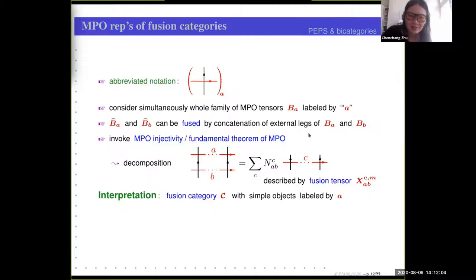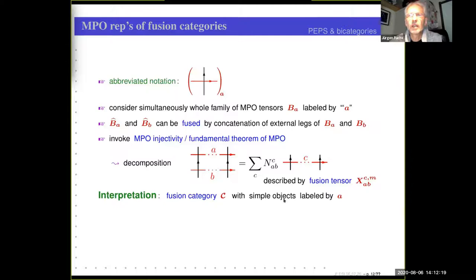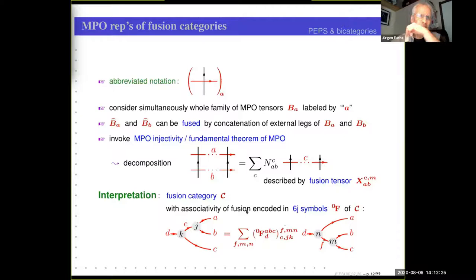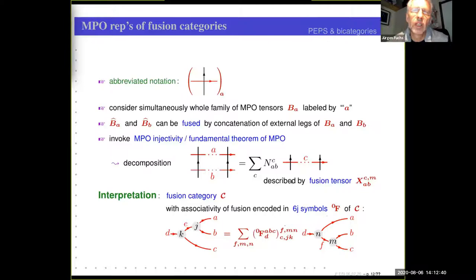By invoking an analog of the fundamental theorem of MPS, called the fundamental theorem of MPO, one can argue that the fusion of two such operators can be written as a linear combination, meaning there is a corresponding fusion tensor. One possible interpretation is that this just describes a tensor product in a fusion category, where the label A corresponds to isomorphism classes of simple objects. The associativity of the fusion would be encoded into the 6J symbols of the category C, which I denote by 0F here.